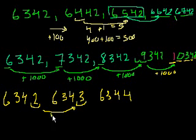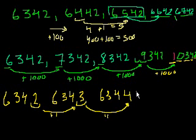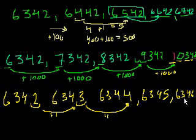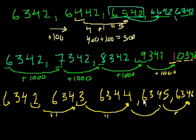So we're adding 1 there, adding 1 again. What's going to be the next one? Well, we'll just add 1 to the 1s place. It's going to be 6,345, right? Adding 1 to 4. And then we have 6,346, adding 1 from 5 to 6.